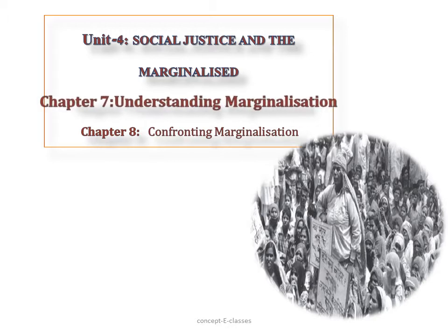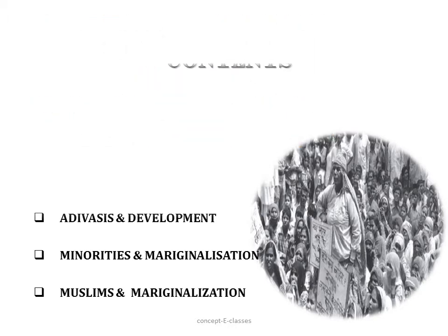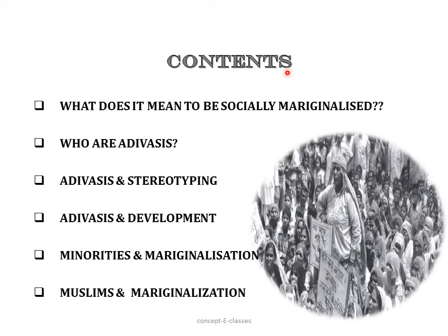In this video, we'll be dealing with Chapter 7. First we'll see what it means to be socially marginalized, then we'll study about two communities considered to be socially marginalized in India. The first one are the Adivasis. We'll also see how we represent or stereotype Adivasis and the development of Adivasis. Then we'll discuss about minorities and marginalization, and the second community which is being marginalized in India — the Muslims.